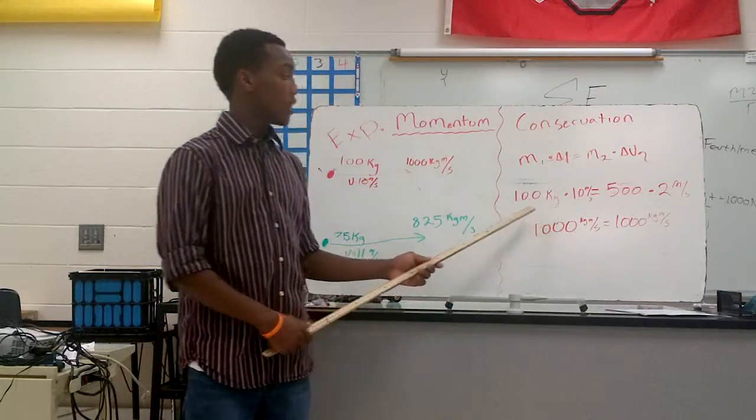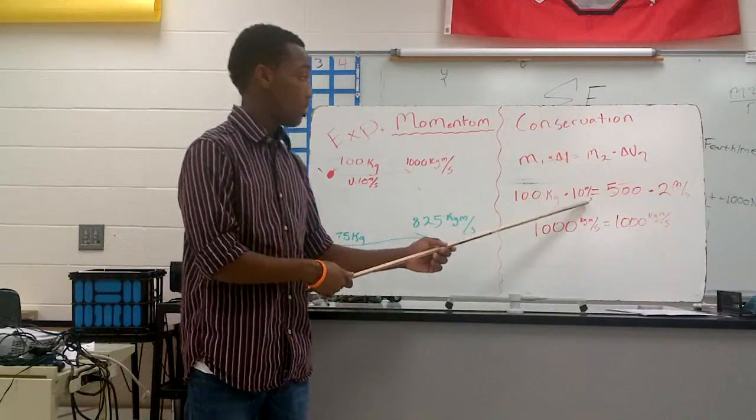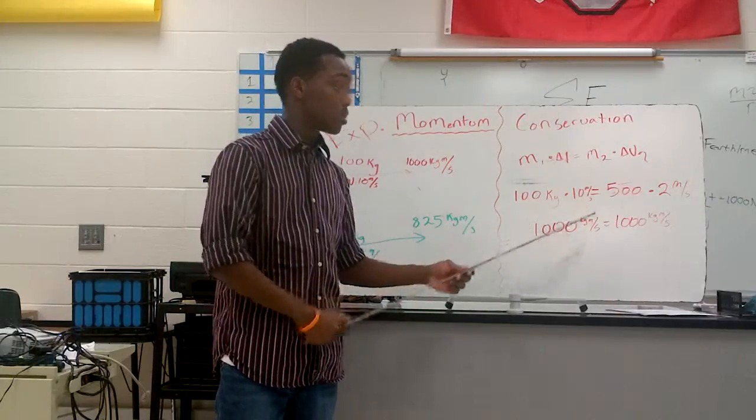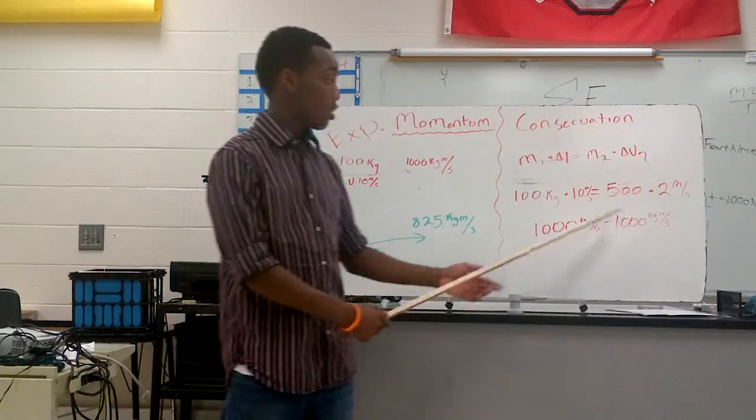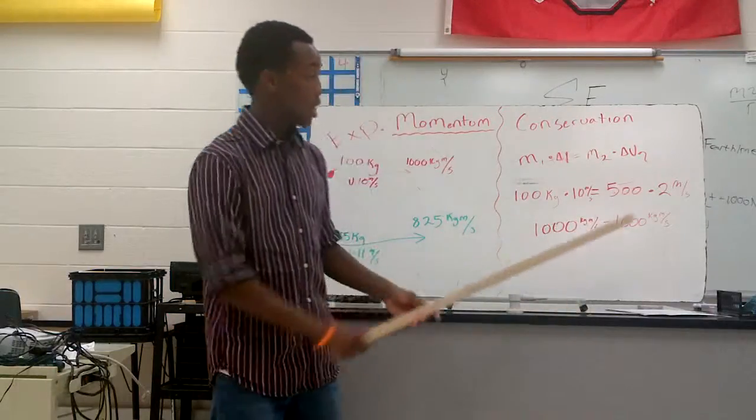So, let's say object one has a mass of 100 kilograms with the velocity of 10 meters per second. Now, the object has 500 kilograms times 2 meters per second.